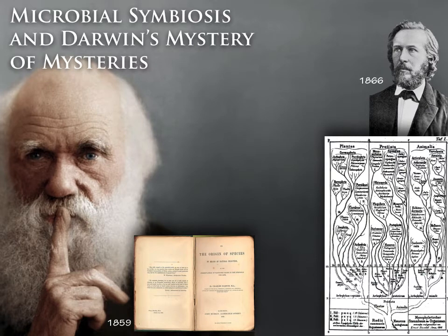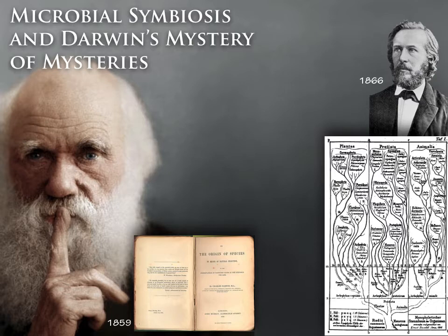This next person is Ernest Haeckel, who gives us his general tree of life. Eukaryotes still take precedent here and represent the crown groups of this visionary tree — protists, animals, and plants represent the majority of diversity. The bacteria are down at the base of the tree in a group called Monera, and basically nothing was known about them.